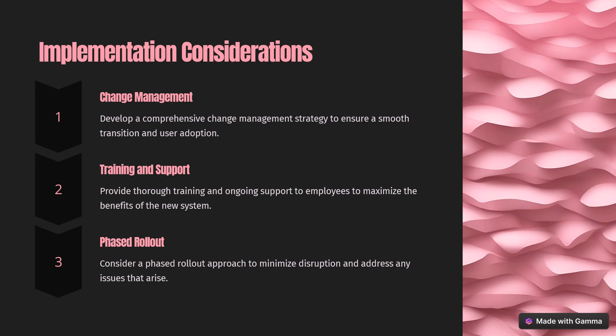The next slide discusses implementation considerations. First, change management: develop a comprehensive change management strategy to ensure a smooth transition and user adoption. Second, training and support: provide thorough training and ongoing support to employees to maximize the benefits of the new system. Third, phased rollout: consider a phased rollout approach to minimize disruption and address any issues that arise when implementing the technology solutions practically at Zenith.